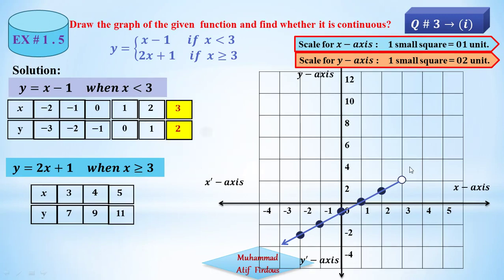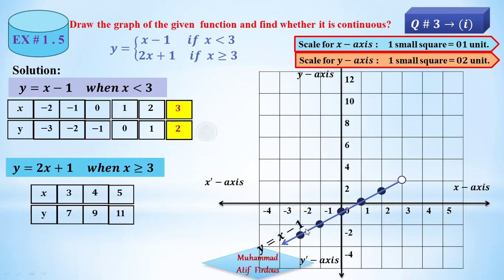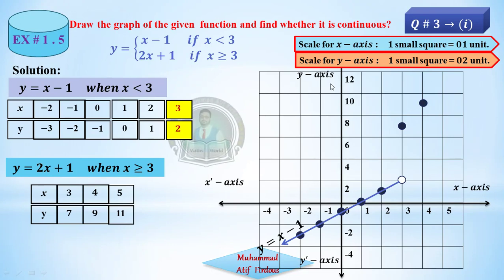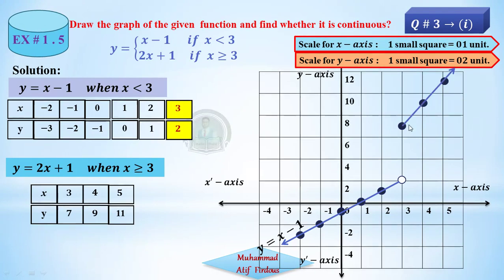So this is the graph for y equals x minus 1. Now for y equals 2x plus 1: order pair 3 and 7 — x equals 3, y equals 7, they meet. Then x equals 4, y equals 9. Then x equals 5, y equals 11. Both parts of the graph are now drawn.